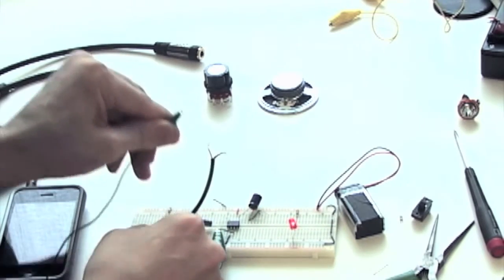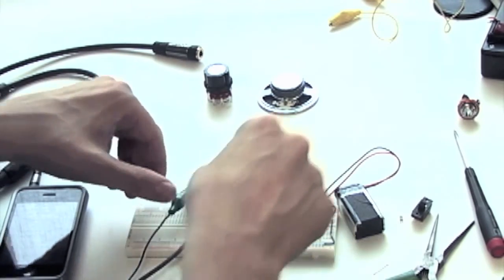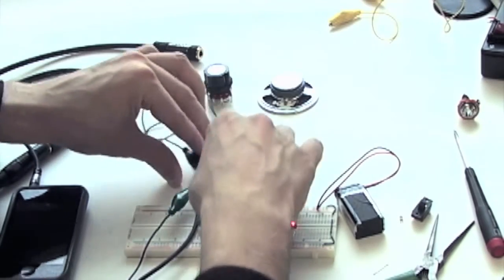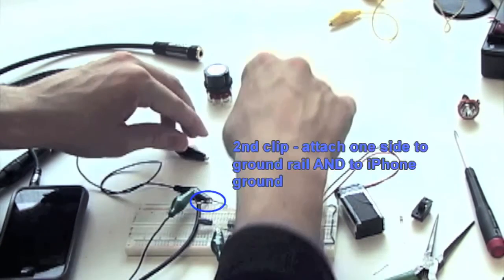Using a short wire, attach the green clip to the same row as the green input wire. Connect one end of the black alligator clip to both the ground from the iPhone and the ground rail of the breadboard.